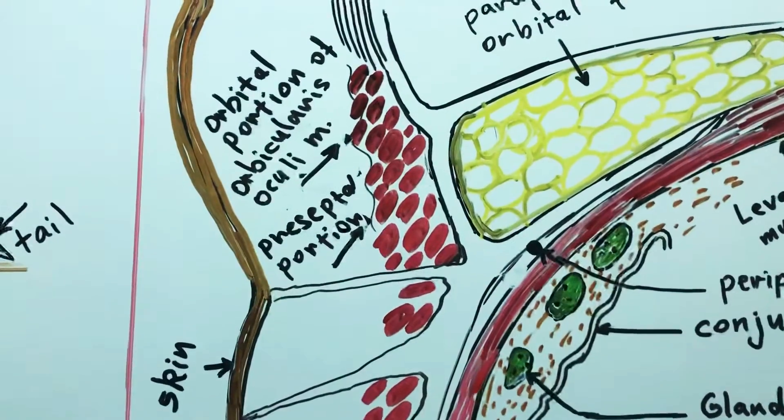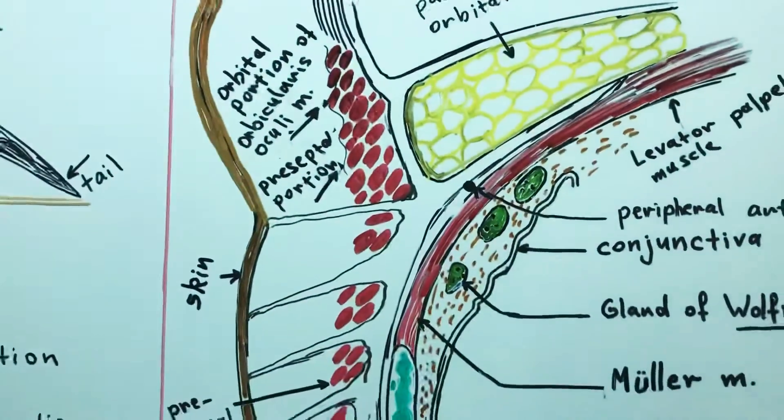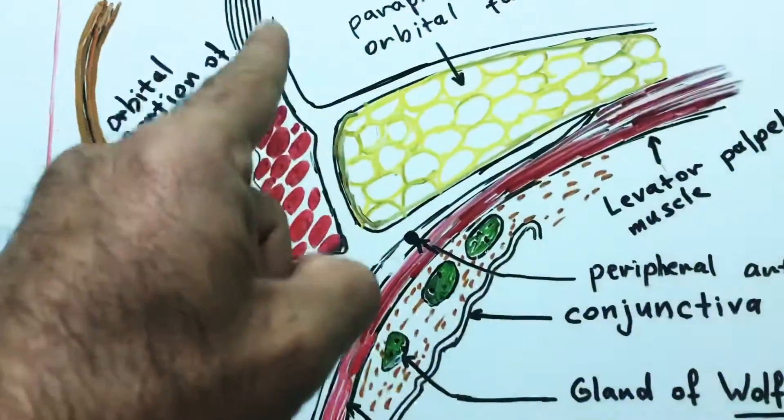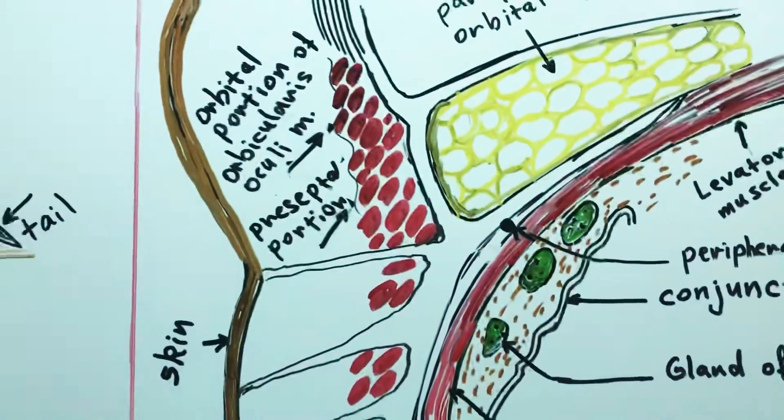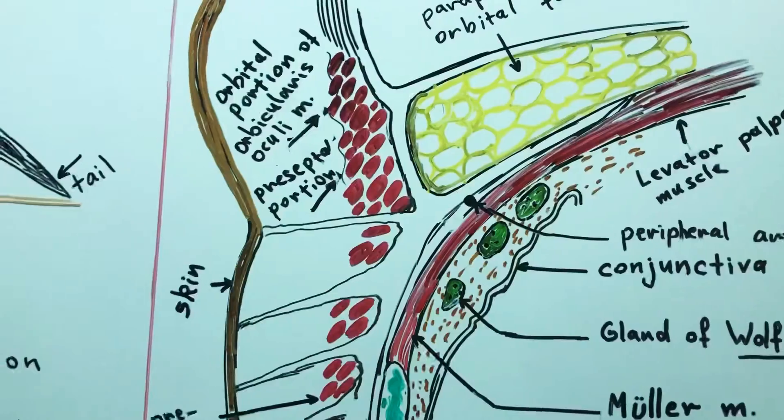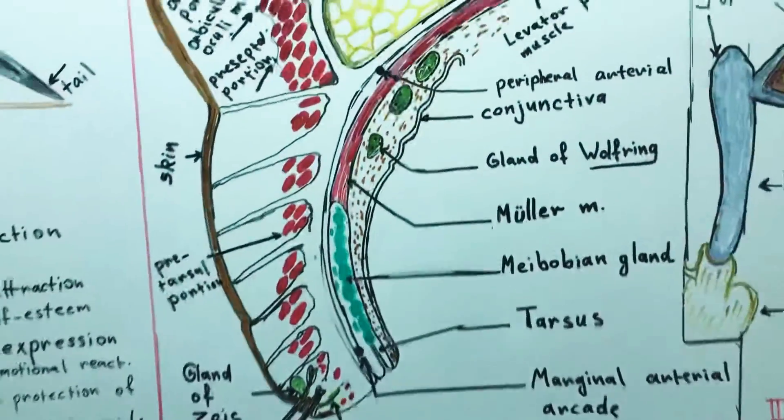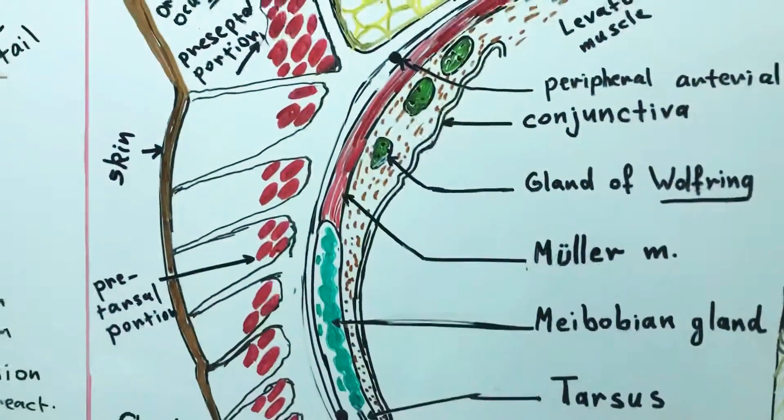The third layer of the eyelid is the muscular layer. It is actually composed of two muscles. The orbicularis oculi muscle. The portion of the orbicularis oculi muscle that is found in the eyelid is called the palpebral portion of the muscle.